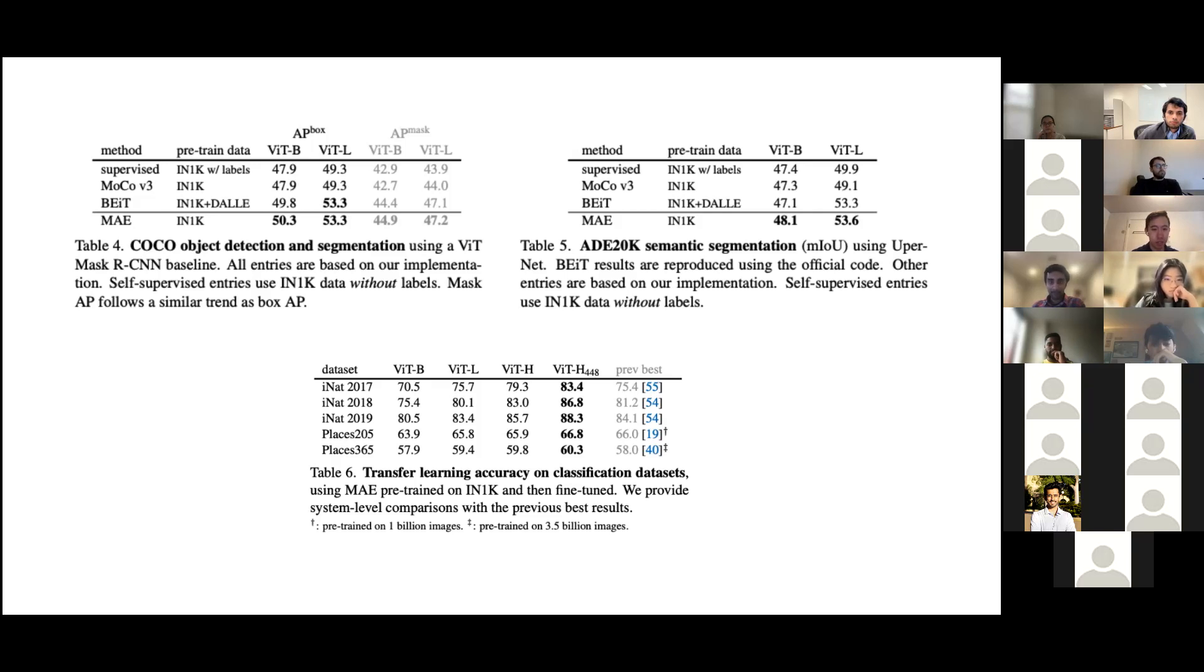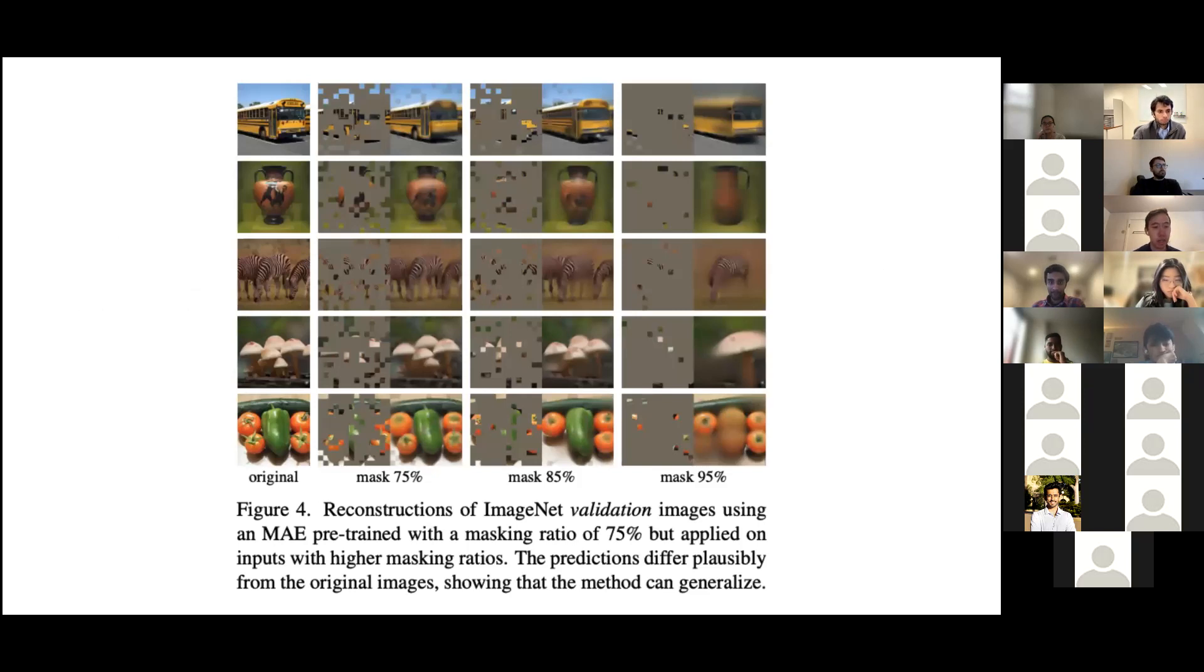Last slide here is on how we can use the reconstruction task and show it's very generalizable. Here we have a model trained on a masking ratio of 75%, but the authors are applying inputs with higher masking ratios and seeing the generated outputs. The basic method is the second to the left one at 75%. But we can see that if you pass in an image with an insanely high masking ratio, say 95% on the right, the generations are actually pretty believable. They're not exactly the original picture and definitely worse than 75% or 85%, but they seem like pretty good plausible generations that if I was to look at those 5% of patches, I could definitely not come up with something as close to the original as the model could.